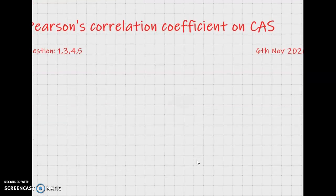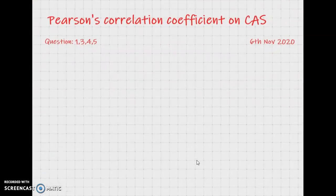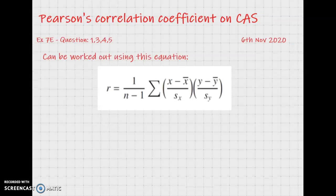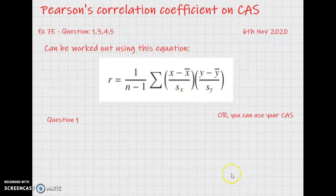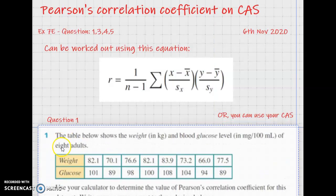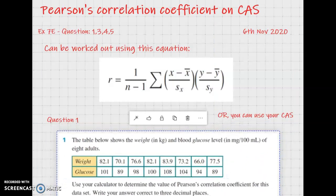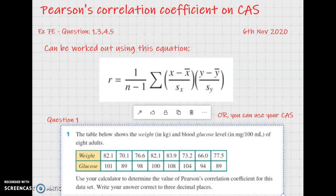We are going to be learning how to calculate it on the CAS today. This is question 7e in your textbooks. We've approached this topic a little bit backwards because you've learned how to use this R value, this Pearson's correlation coefficient, but we haven't learned how to work it out. You can work it out using this equation here — and boy, doesn't that look like a fun equation. So instead, we're just going to use our CAS calculators to do it for us. I'm going to use question 1 to help with that. In question 1, we've got a table with the weight of a person and blood glucose levels in milligrams per 100 mils of 8 adults. We use a calculator to determine the value of Pearson's correlation coefficient and write our answer to 3 decimal places. So let's get our calculators out.